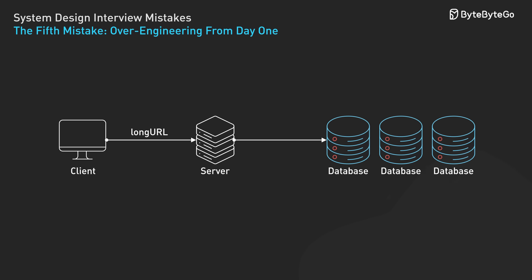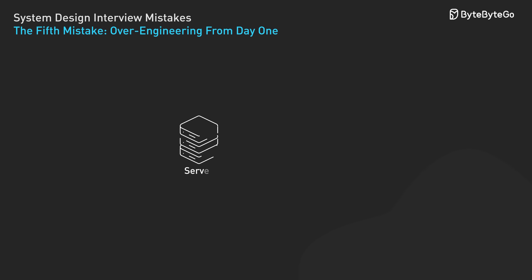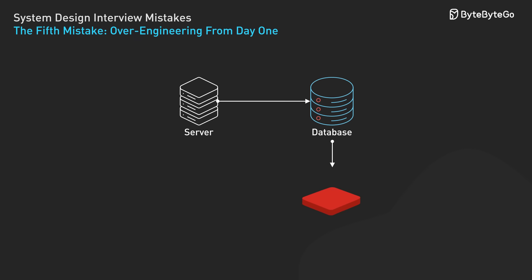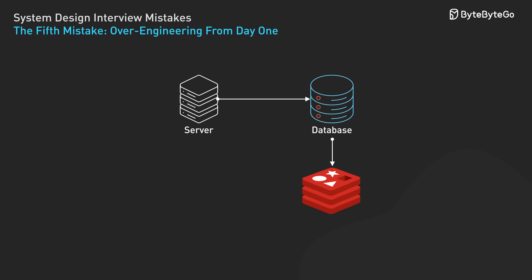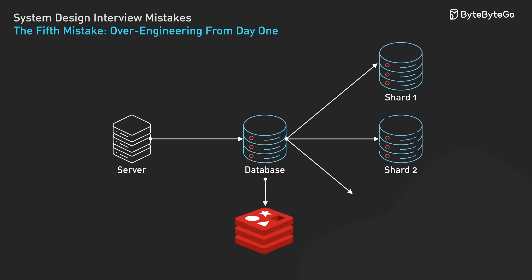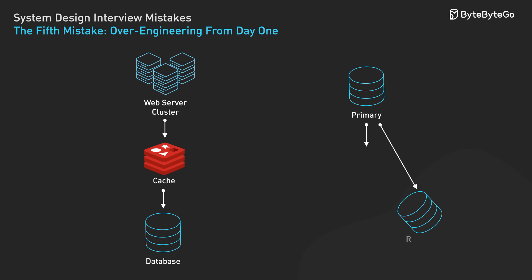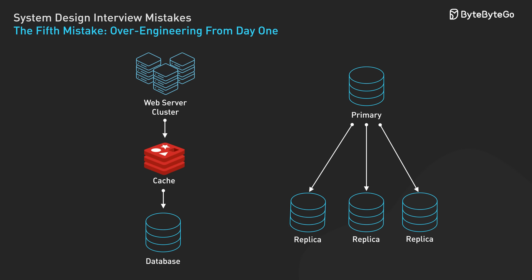The fix: start simple, then scale. For 1,000 URLs per day, begin with a basic architecture — single web server, single database, simple hash function. This handles the requirements with minimal complexity. Then discuss scaling: as we grow to 100,000 URLs per day, we might add caching; at millions per day, we'll consider database sharding. This demonstrates you understand the relationship between scale and complexity, and can design for growth without unnecessary early optimization.